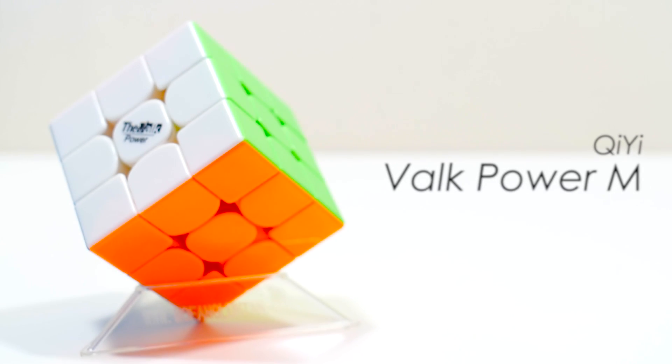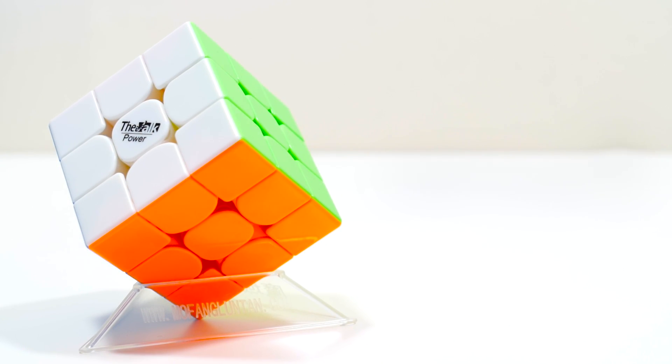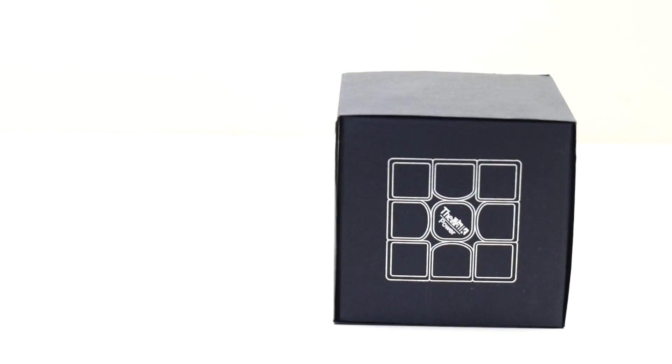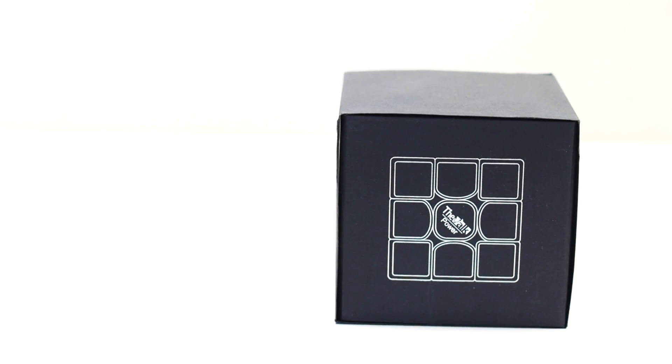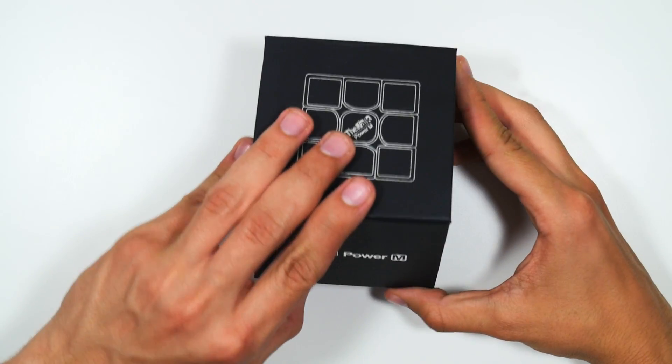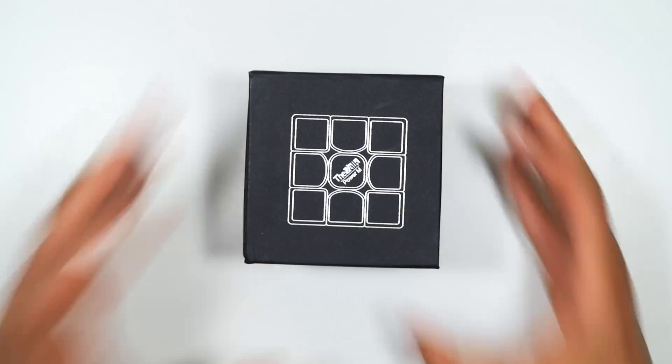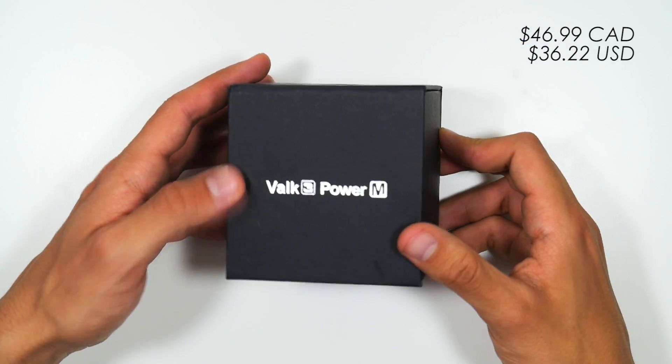Next up at the number 2 position, the one that will most likely be debated amongst the comments other than the GuoGuan Yuexiao, is the Valk Power M. This cube is the updated version of the Valk, and it is definitely one of my favorites due to the really soft premium feel that the puzzle has. This puzzle comes with a lot in the box, but with that it comes with a hefty price tag of around $47 Canadian and $36 American dollars.